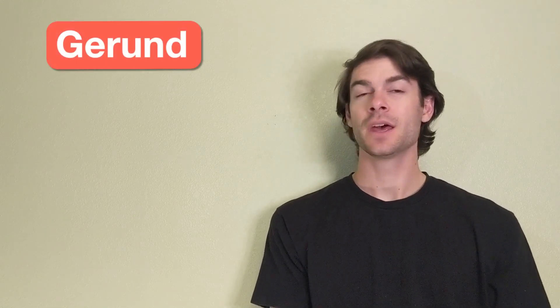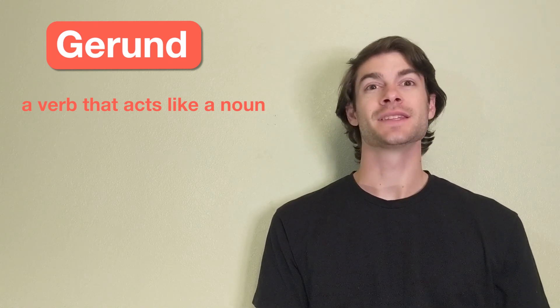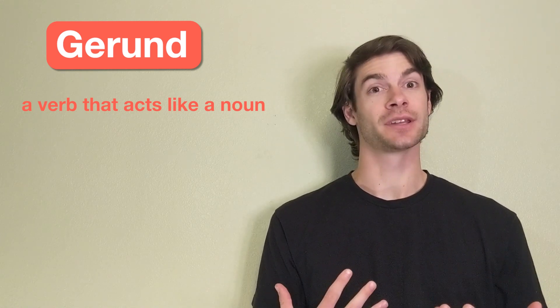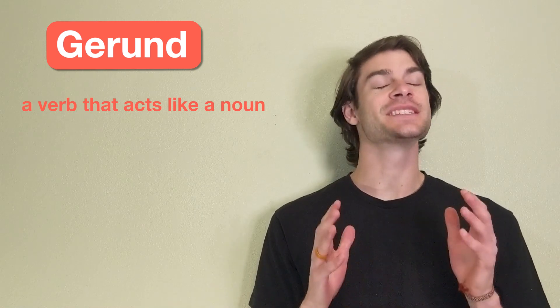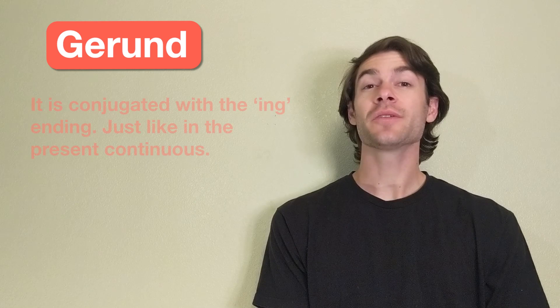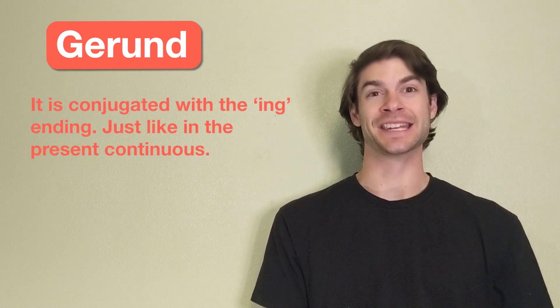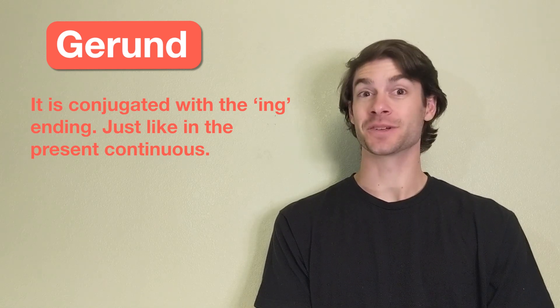Let's start with what a gerund is. A gerund is a verb that acts like a noun. This means that we often use a gerund in a sentence the same way we would use a noun. A gerund is conjugated with the ing ending, just like in the present continuous.